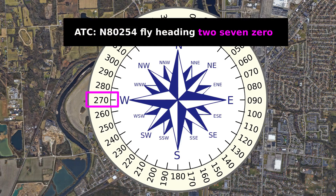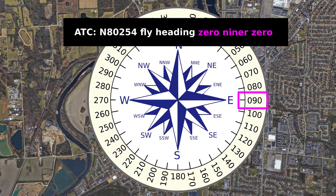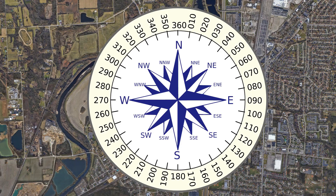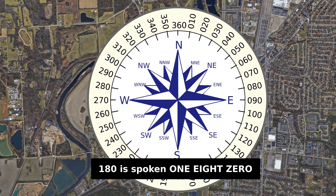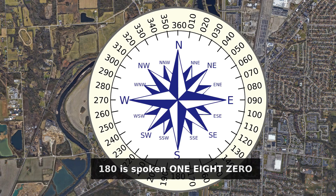For example, west is 270, south is 180, and east is 090. Notice that we always say three digits even when the leading digit is a zero. This gives our radio communications a predictable rhythm that makes it easier to understand what the person on the other end is saying.